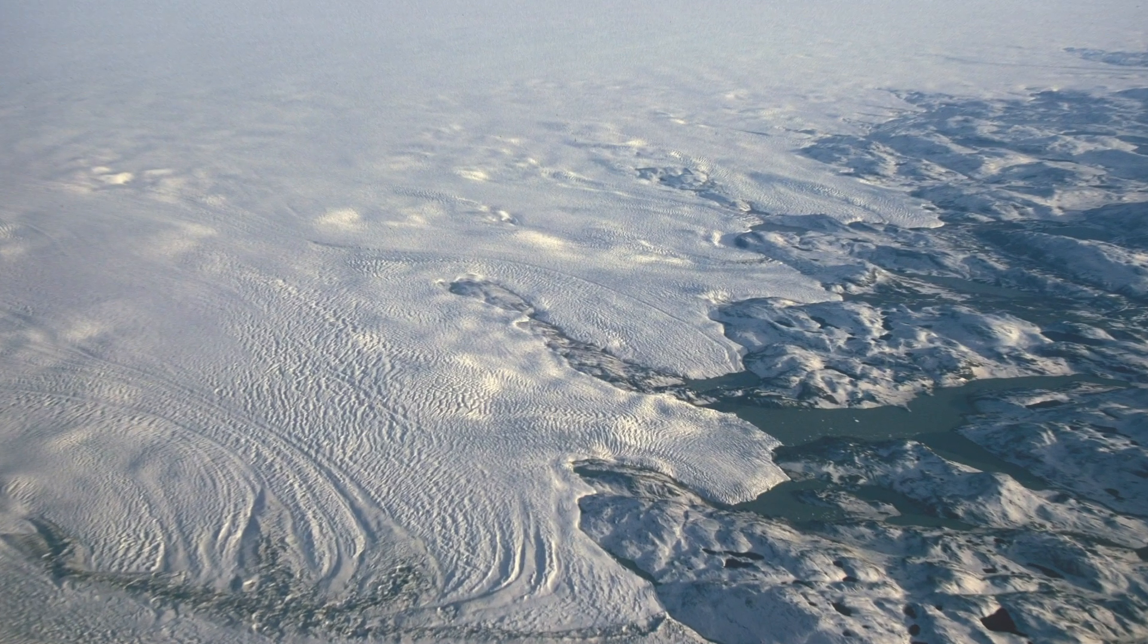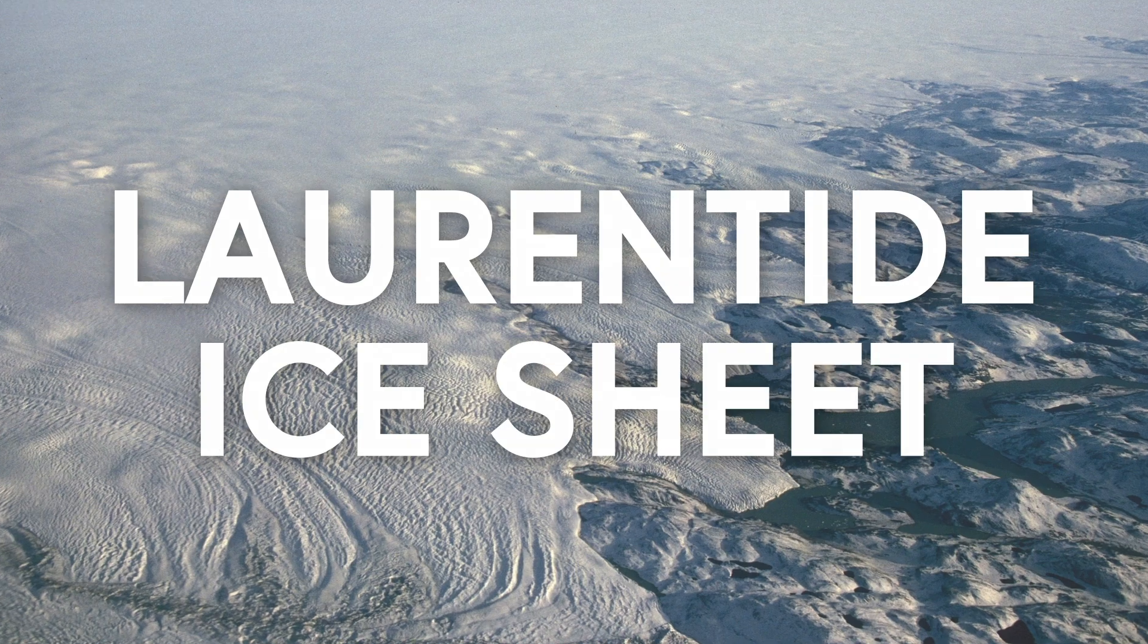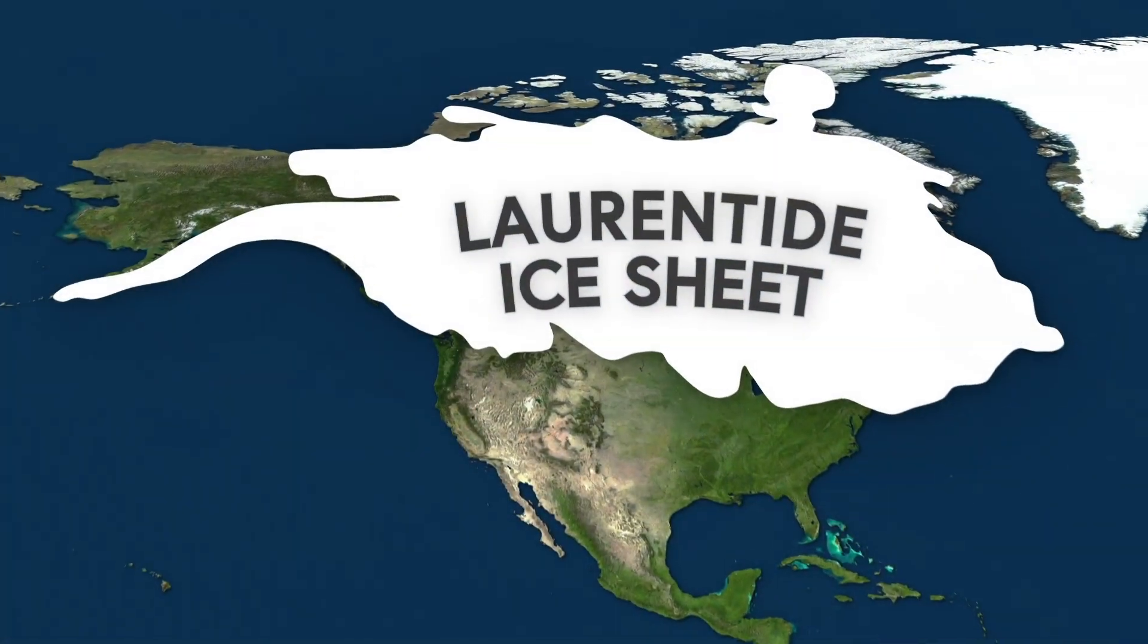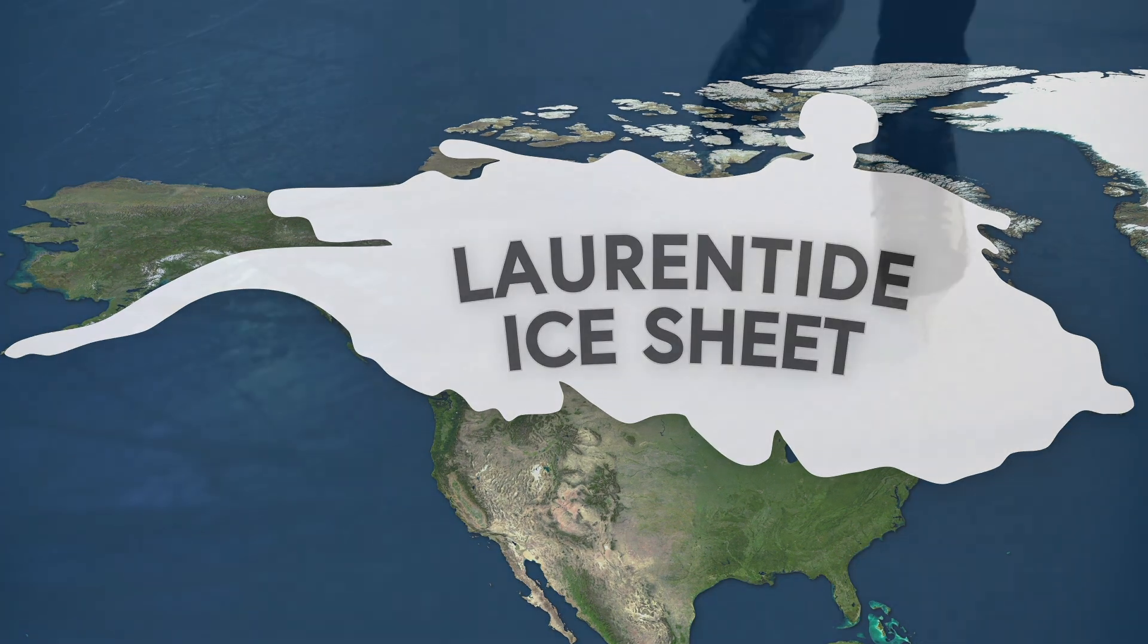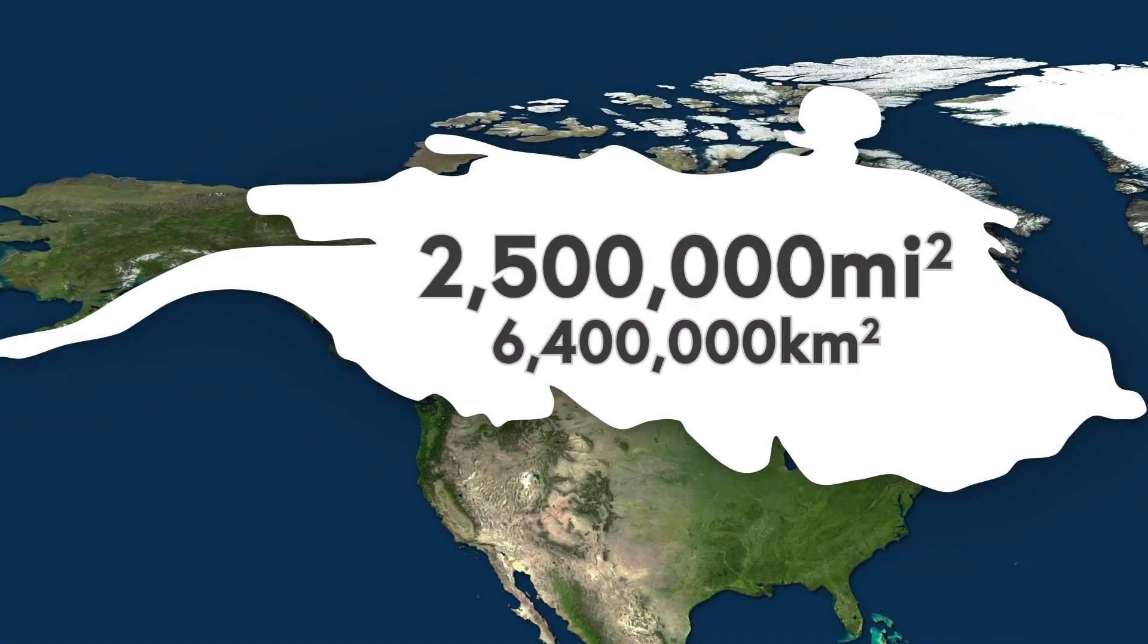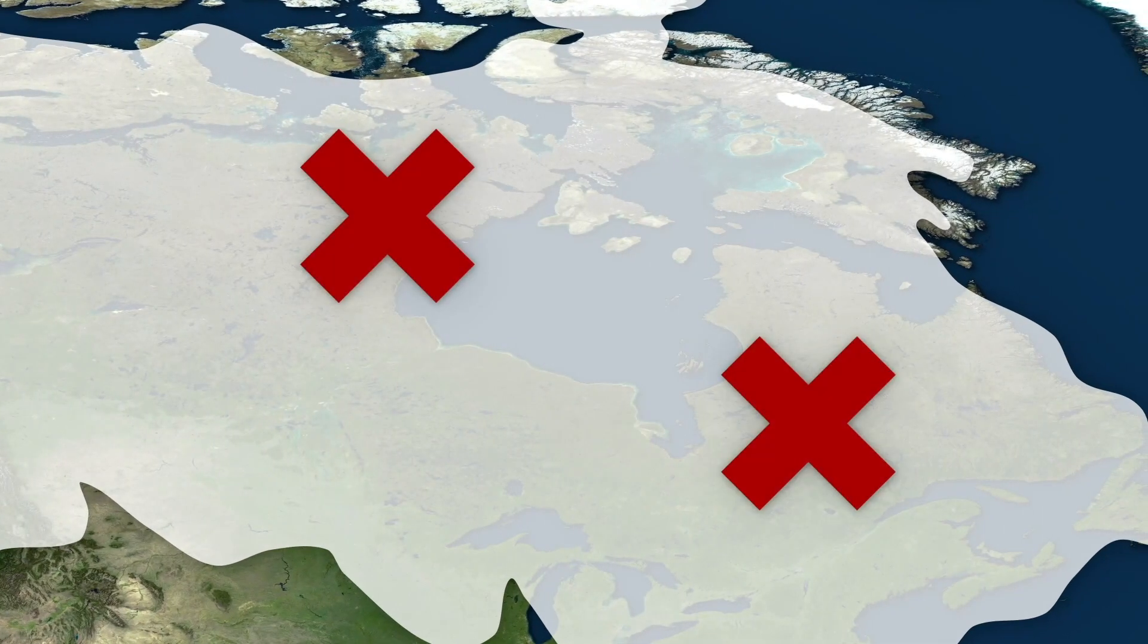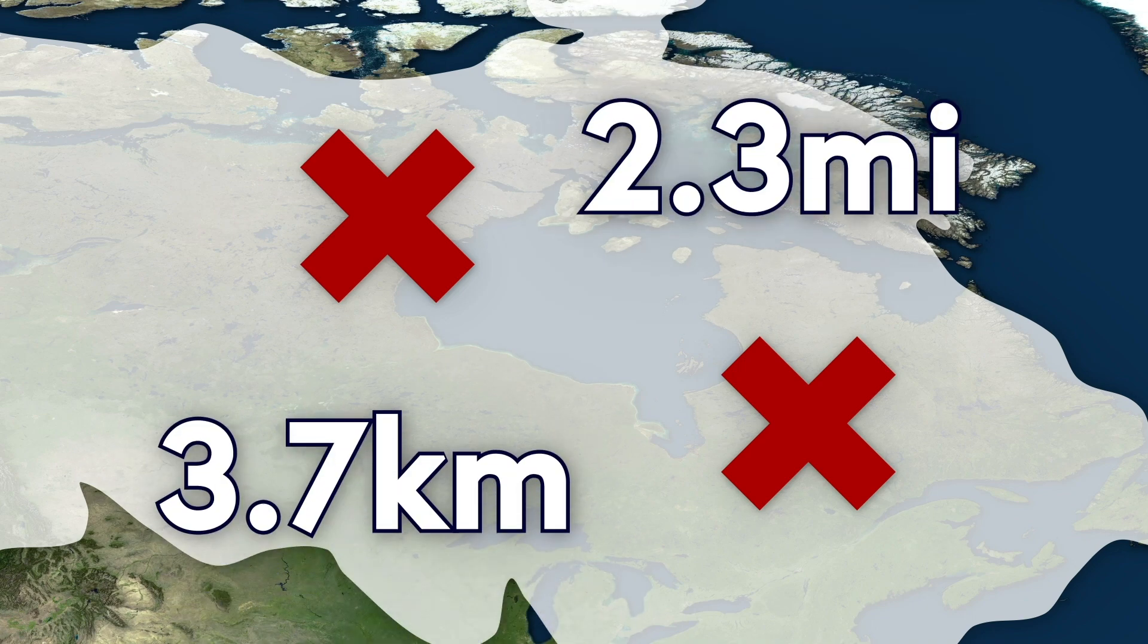The second theory has to do with something called the Laurentide Ice Sheet. Back in the Ice Age, there was this giant sheet of ice that covered most of where Canada and the northern US are now. It was like an ice skating rink, except 2.5 million square miles across, and about 2 miles or 3.2 kilometers thick, so actually not like an ice skating rink at all, and in two places in Hudson Bay, it was even thicker—close to 2.3 miles or 3.7 kilometers.